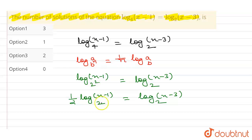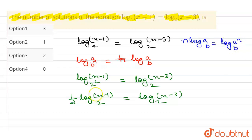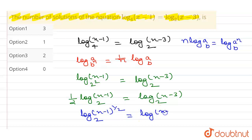There is another property of log: if we have (1/n) log a to the base b, then we can write it as log of a to the power (1/n) to the base b. Here it is 1/2, so it can be written as log of (x minus 1) to the whole power (1/2) to the base 2, equals log (x minus 3) to the base 2.